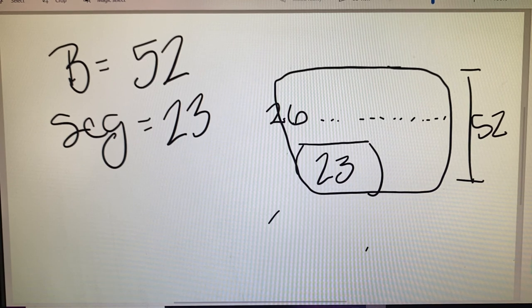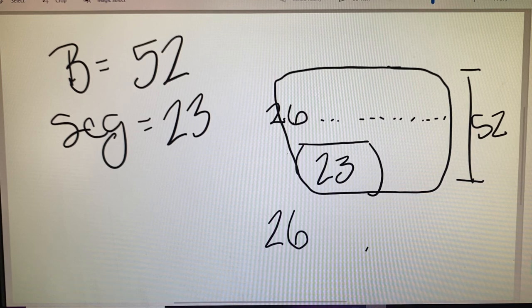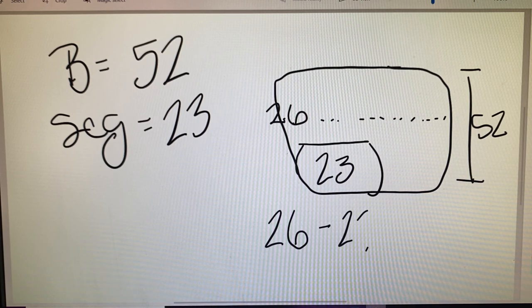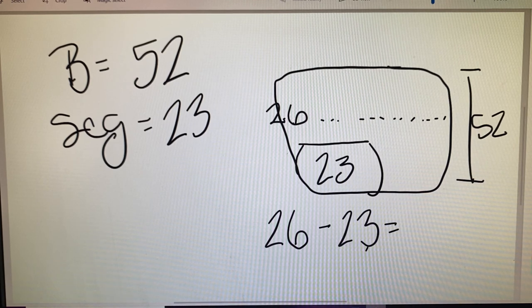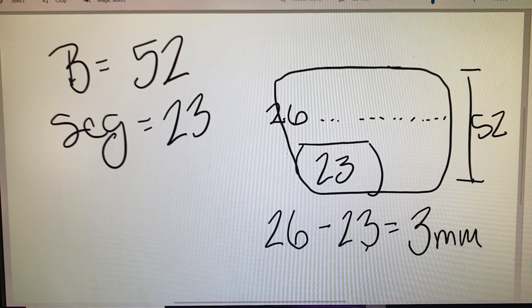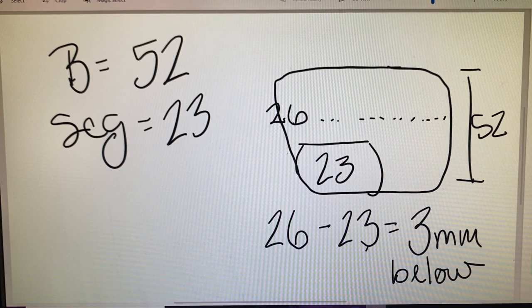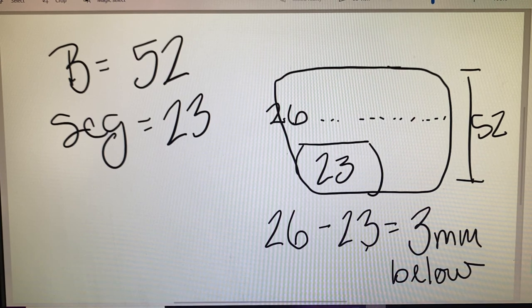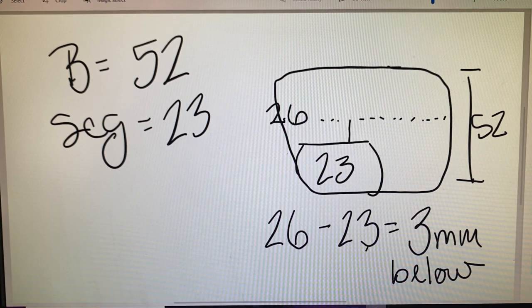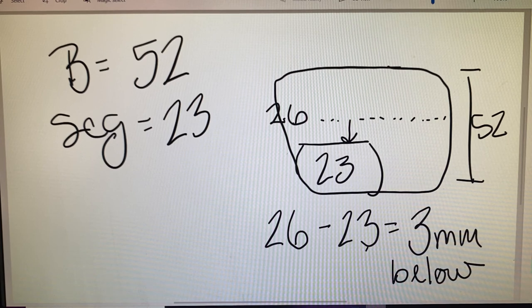Then we need to do our datum minus our seg height for a difference of 3 millimeters. And we would say that this is below because our seg height is less than or set below the datum line.